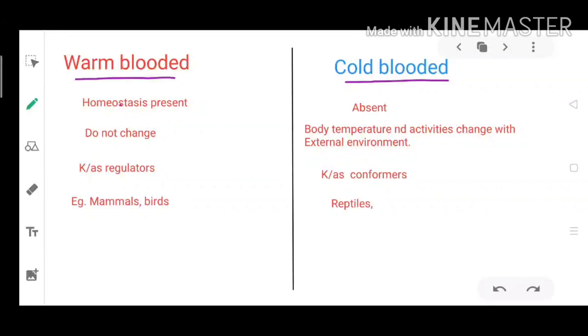So the organisms which can afford homeostasis are called warm blooded animals. Let's make a quick comparison between the two. In cold blooded animals, homeostasis is absent, and it is present in warm blooded animals.